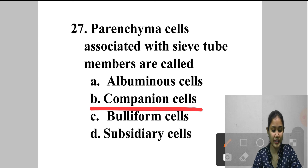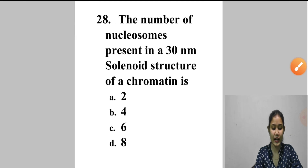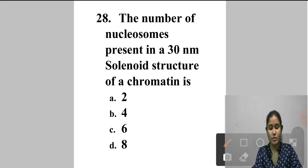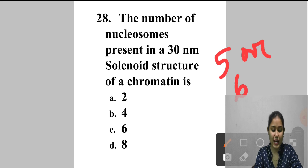Question 28: The number of nucleosomes present in a 30 nm solenoid structure of chromatin is — A. 2, B. 4, C. 6, D. 8. A solenoid is the packing of DNA as a 30 nm fiber of chromatin, resulting from the helical winding of at least 5 or 6 nucleosome strands. The option 5 is not available, but 6 is. Answer is option C — 6.